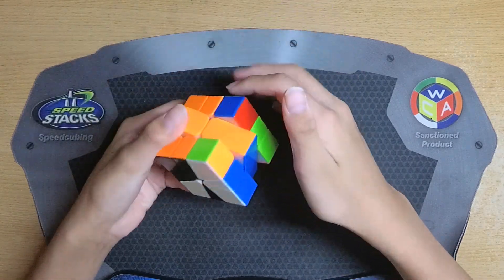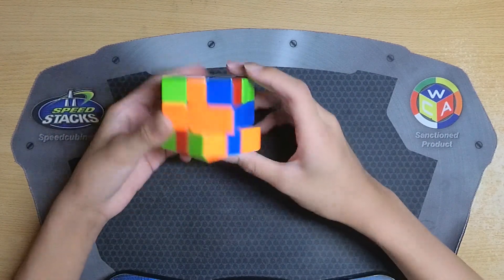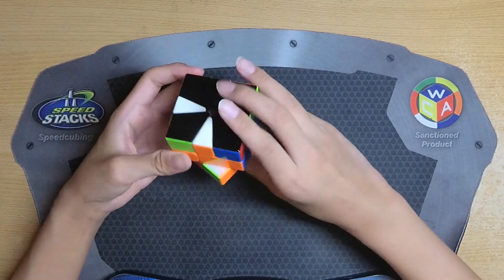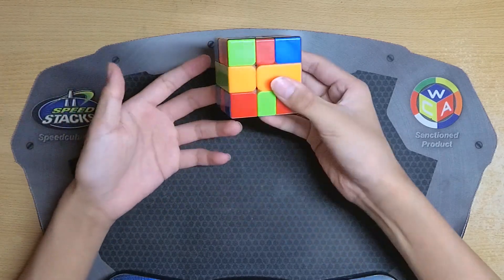Next I had a pretty nice two slice EO which I can solve just like so, and this left me with a really easy EO case which I can just solve with four slices like this.